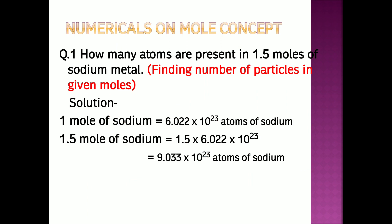Now let us revise some numericals. First question: how many atoms are present in 1.5 moles of sodium? We always start from what we know: 1 mole of sodium = 6.022 × 10²³ atoms of sodium. So 1.5 moles of sodium = 1.5 × 6.022 × 10²³ = 9.033 × 10²³ atoms of sodium.